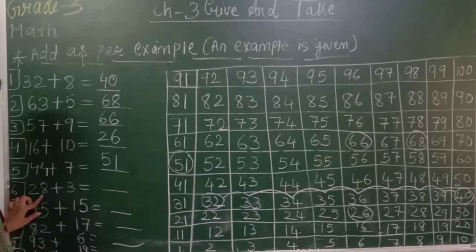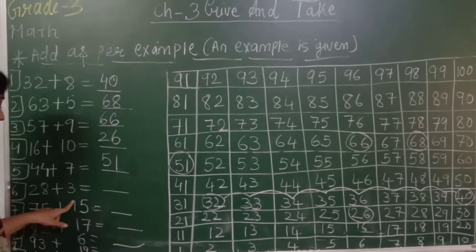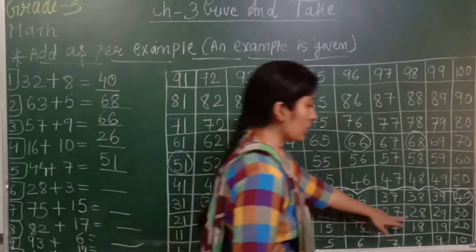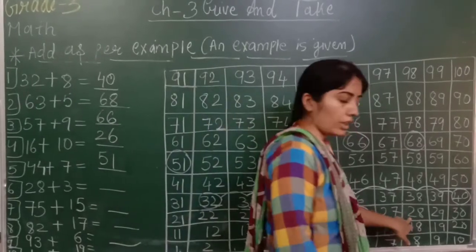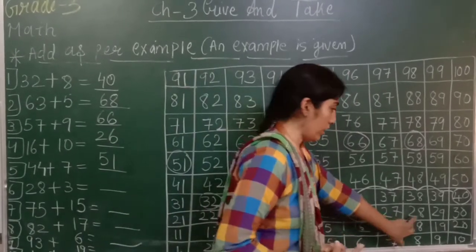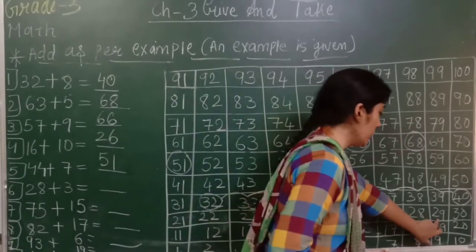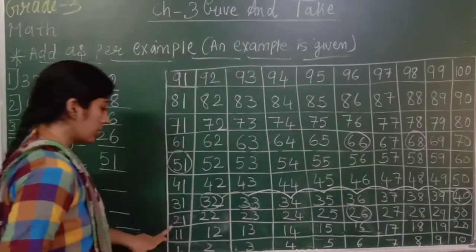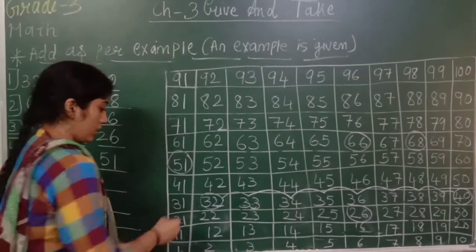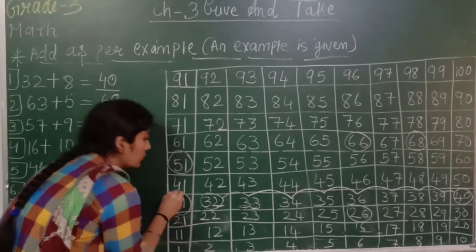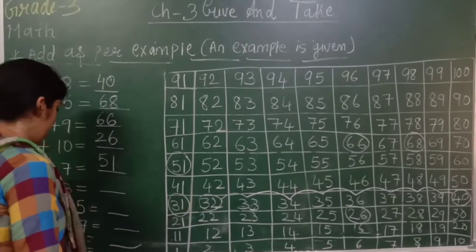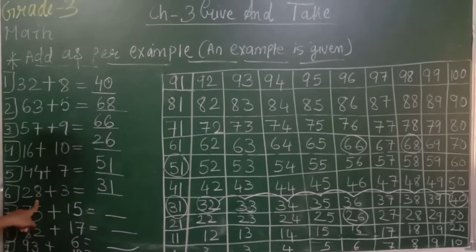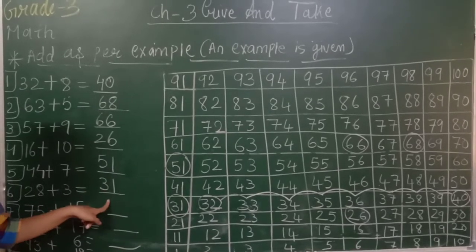Next: 28 plus three. Where is 28? Here. Twenty-eight pe khaade hoke, humko three steps chalna hai. One, two, three. Answer is 31. That means 28 plus three is equal to 31.